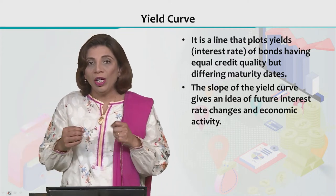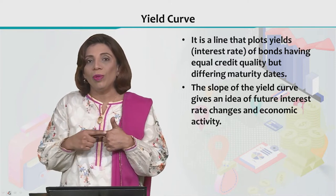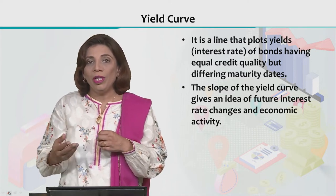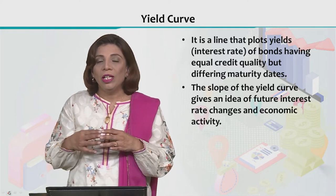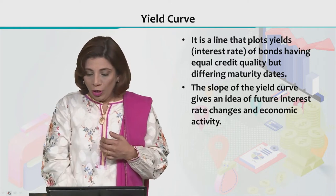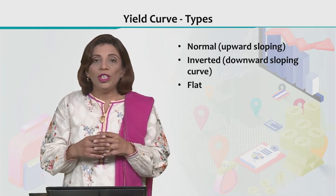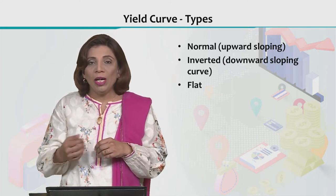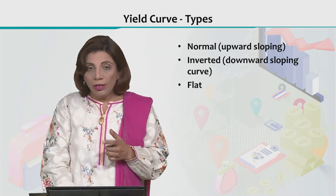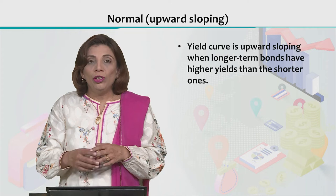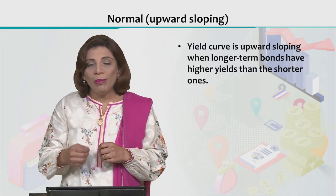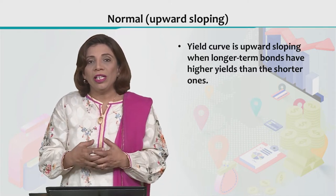This is a line in which we take on the vertical axis the yield or interest rate, and on the horizontal axis we give the maturity time period. It predicts what is going to happen in the financial markets and overall economy in the coming time or in future. We have three types of yield curves: the first one is the normal yield curve, which is upward sloping; we have an inverted downward sloping yield curve; and the third type is a flat yield curve. The shape of the yield curve defines how the financial sector is going to influence and how the economy is going to perform over a period of time.